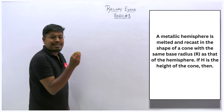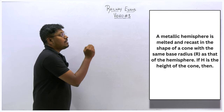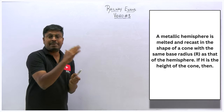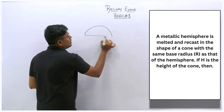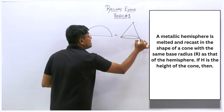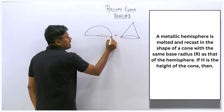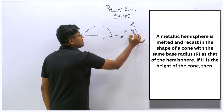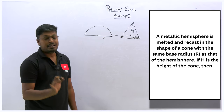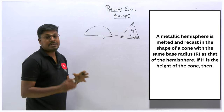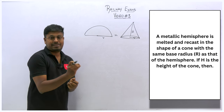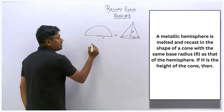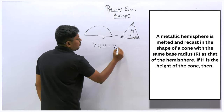First question: a metallic hemisphere is melted and recast in the shape of a cone with the same base radius. The height h is the height of the cone. A metallic hemisphere is melted to form a cone with the same radius, and our target is to find the height of the cone.